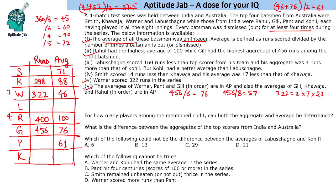If Smith was out 6 times: 71 × 6 = 426. Khwaja scored 14 more, so Khwaja's total = 440, which is divisible by 88 — this works! Testing 8 dismissals: 71 × 8 = 568, which exceeds the maximum aggregate of 456, so that's not possible. The only valid scenario is Smith dismissed 6 times and Khwaja dismissed 5 times.